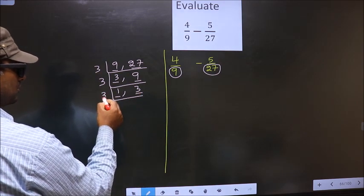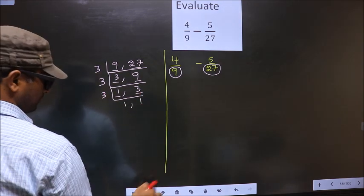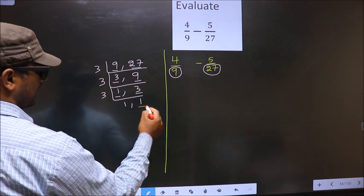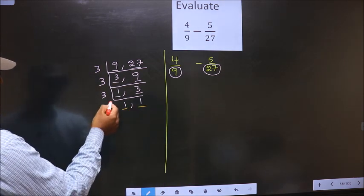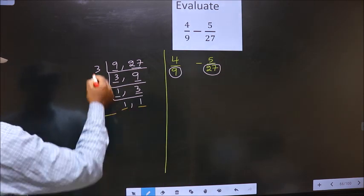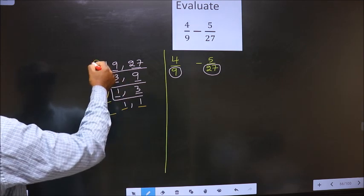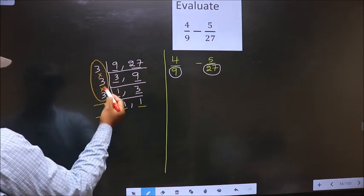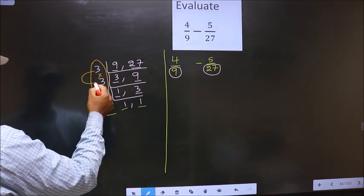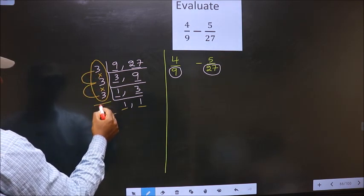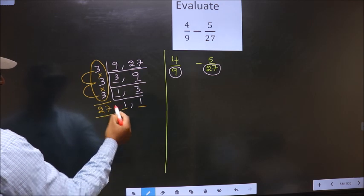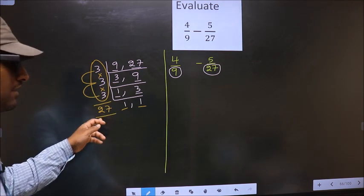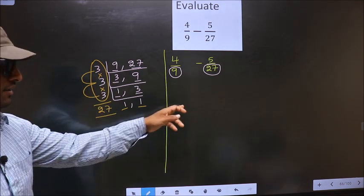So the LCM of 9 and 27. The first number is 9. 9 is 3, 3 is 9. The other number 27. When do we get 27 in 3 table? 3 times 9 is 27. Now here we have 3. 3 is the prime number. So 3 times 1 is 3. The other number 9. When do we get 9 in 3 table? 3 times 3 is 9.